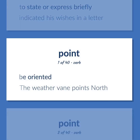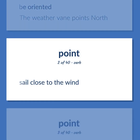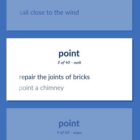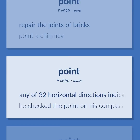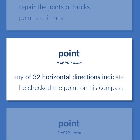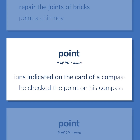Point: Be oriented. Example: The weather vane points north. Sail close to the wind. Repair the joints of bricks. Example: Point a chimney. Any of 32 horizontal directions indicated on the card of a compass. Example: He checked the point on his compass.